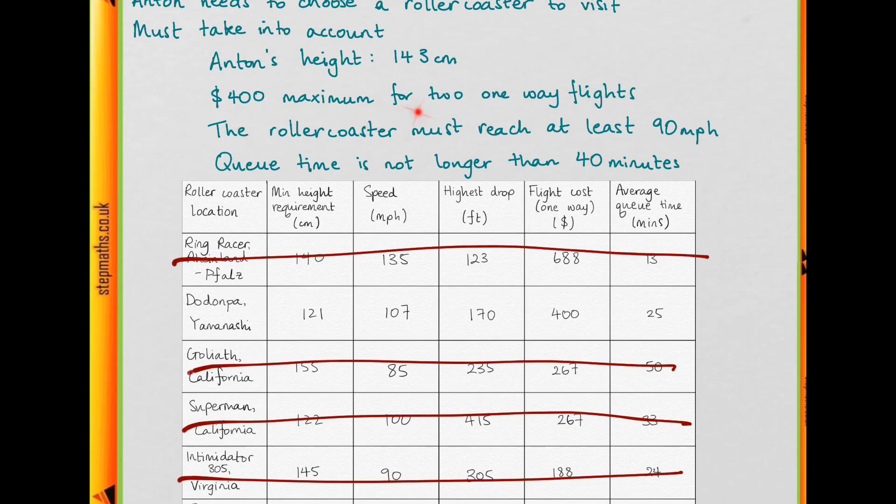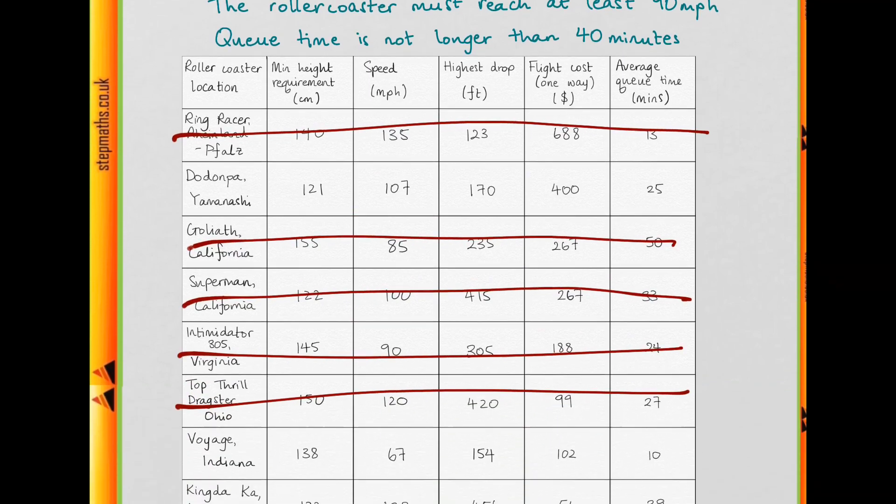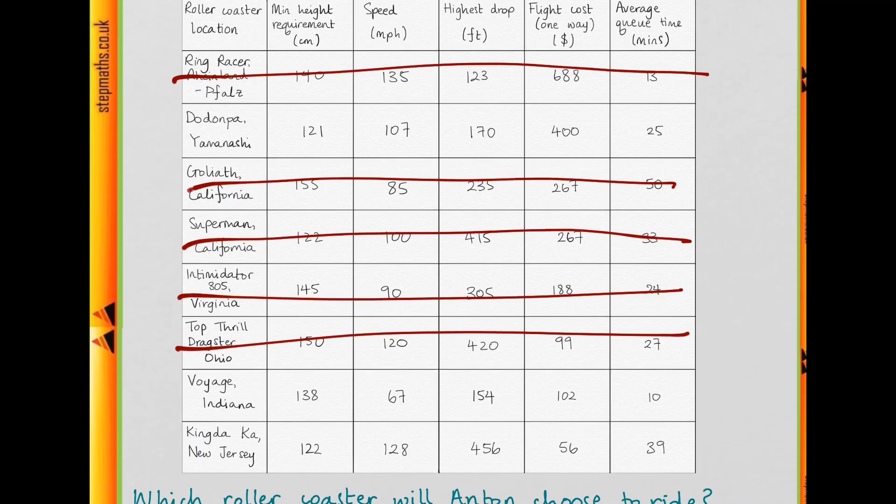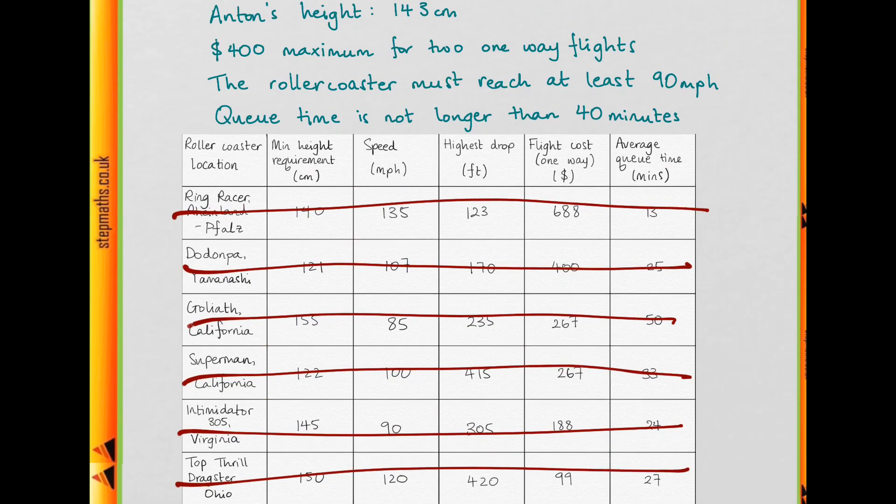We have $400 maximum for 2 one-way flights, so each one-way flight can't cost more than $200. If we look at our roller coasters, this one is too expensive.